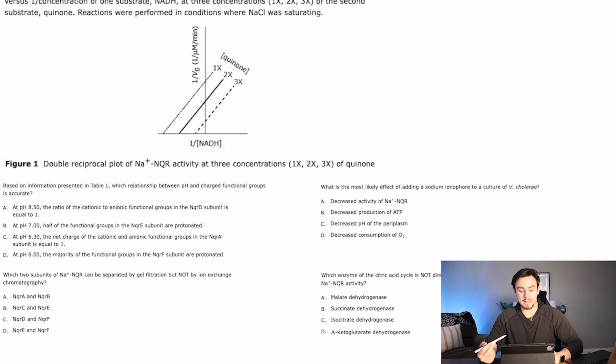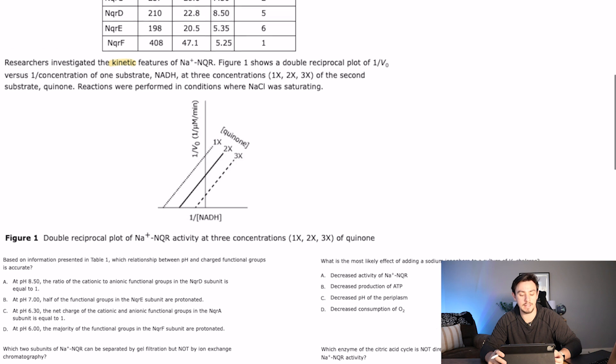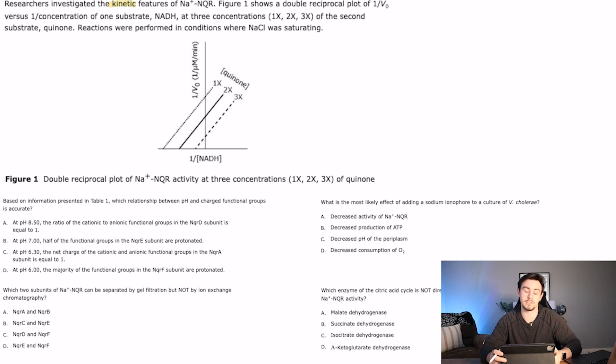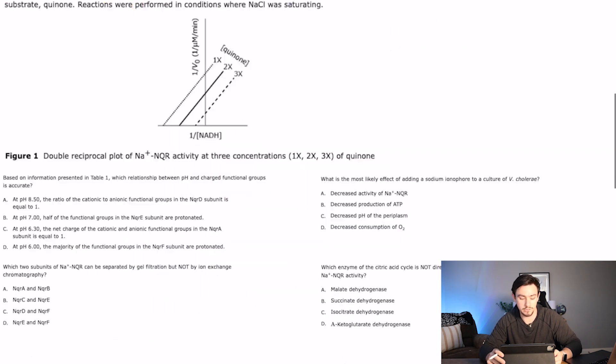Reactions were performed in conditions where sodium chloride was saturating. So this kind of looks like a Lineweaver-Burk plot here. I don't know that it necessarily is, but this kind of looks like that's what they're talking about. So we'll read this caption. Double reciprocal plot. This enzyme activity at three different concentrations of quinone. So this is showing how the enzyme responds to different concentrations of quinone. Is it faster with less? Is it slower with more? So that's kind of the passage. Let's go ahead and take a look at the questions.